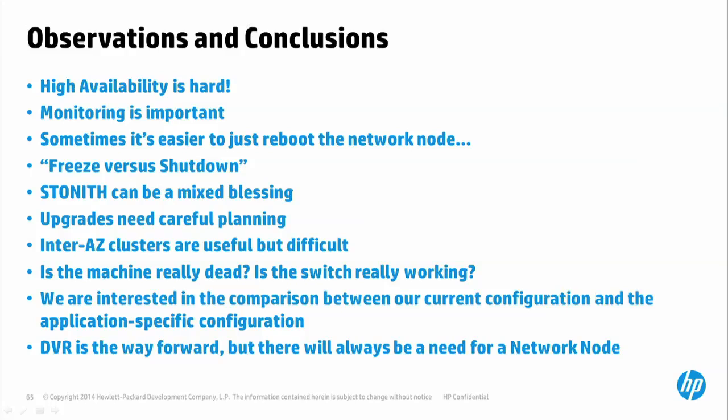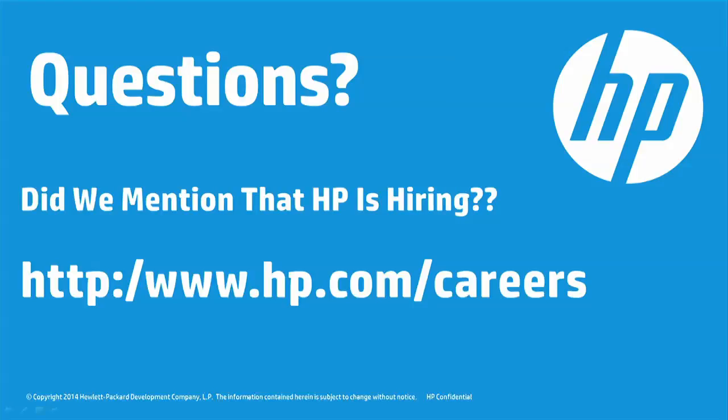In summary: HA is a difficult problem, and Pacemaker and Corosync complexity becomes apparent the more you run into real issues. Monitoring is really essential. Sometimes it's easier to just reboot the node. Stonith can be a mixed blessing. Upgrades require careful planning. DVR would save a lot of grief in terms of avoiding high-latency failovers on network nodes — offloading work to the compute host makes L3 agent HA much easier. Default SNAT still requires network nodes, but reducing their load helps significantly.